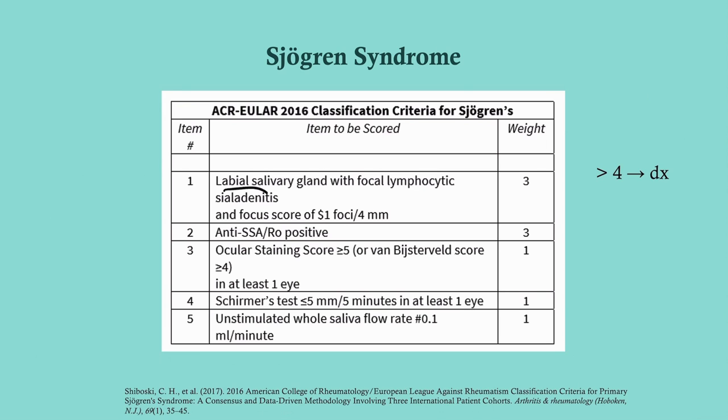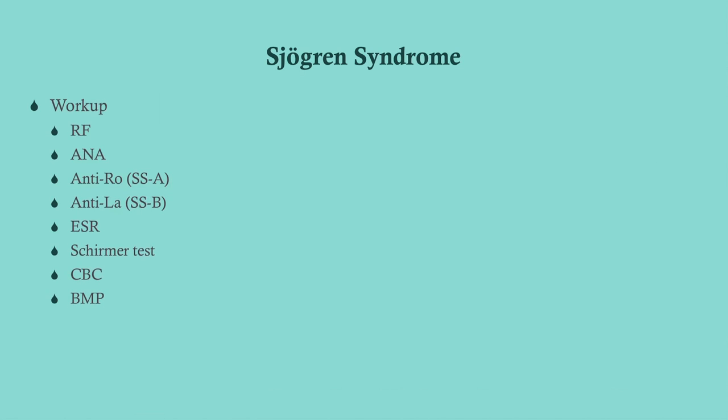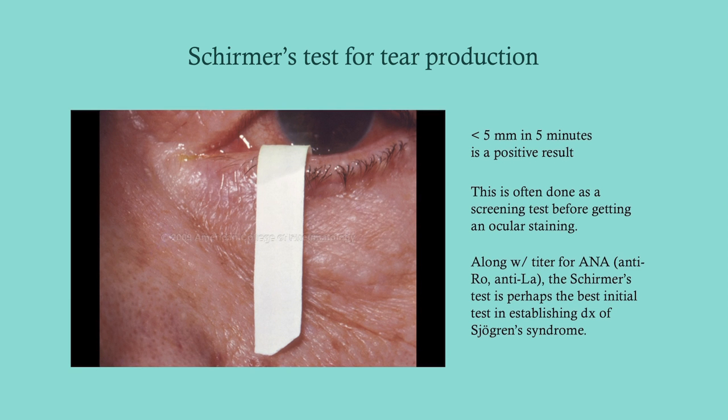Using the 2016 criteria, a positive labial salivary gland biopsy is worth three points, and a positive anti-Ro antibody is also a major contributor. The workup should include rheumatoid factor — not typically positive in Sjögren's but can be — plus ANA, anti-Ro, and anti-La, which are more specific for Sjögren's, along with a sed rate, CBC, and BMP.